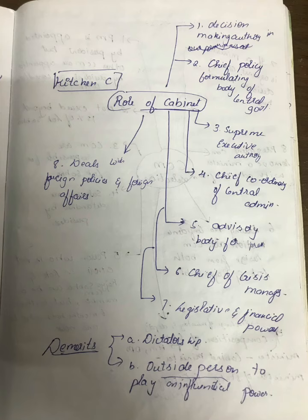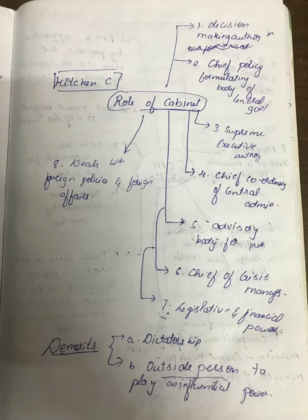There are eight important points about the cabinet. First, they are the main core decision-making authorities. Second, it is the chief policy-formulating body of the central government. Third, supreme exclusive authority rests with them. Fourth, it is the chief coordinator of the central administration. Fifth, they are an administrative body for the overall welfare of the country. Sixth, they are the chief of crisis management — all kinds of crisis management.